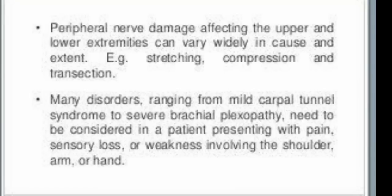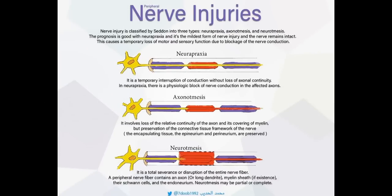Peripheral nerve damage affecting the upper and lower extremities can vary widely in cause and extent — that is, stretching, compression, and transection. Many disorders ranging from mild carpal tunnel syndrome to severe brachial plexopathy need to be considered in a patient presenting with pain, sensory loss, or weakness involving the shoulder, arm, or hand. If you feel any kind of this injury, you may consult your doctor or orthopedist.